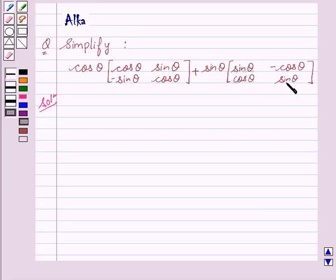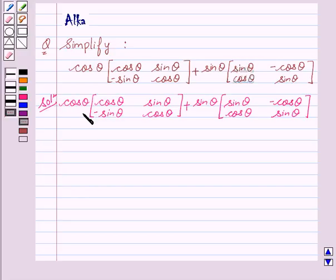Now let's start with the solution. We will multiply cos θ with the given matrix. This gives us cos²θ, cos θ sin θ, minus cos θ sin θ, and cos²θ.